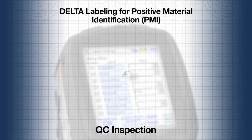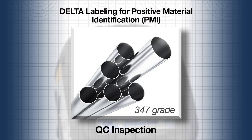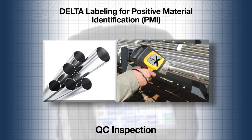In the QC inspection scenario, a fabricator orders six seamless stainless steel 347 grade tubes, two inches in diameter. They should all be tested to ensure that they are the grade ordered.